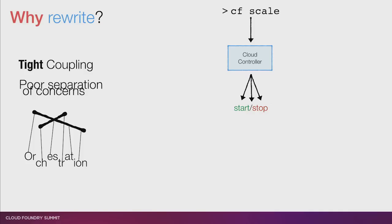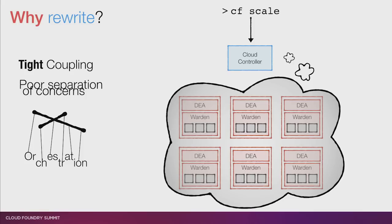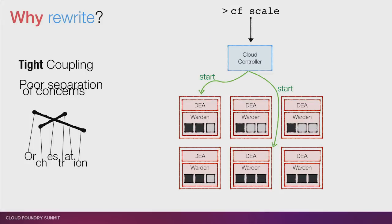What Cloud Controller does is maintain a picture in its head of all of the DEAs and all of the apps running on those DEAs. It looks at that and decides which DEAs to send start messages to. The problem is that the Cloud Controller's picture of reality might not be what reality actually is. So a start message hits a full DEA and nothing happens, when in reality your apps should have ended up on DEAs that actually have the most availability. The Cloud Controller has too much responsibility — it's the great puppeteer — and it's hard in a distributed system to have an accurate picture of the world at all times.